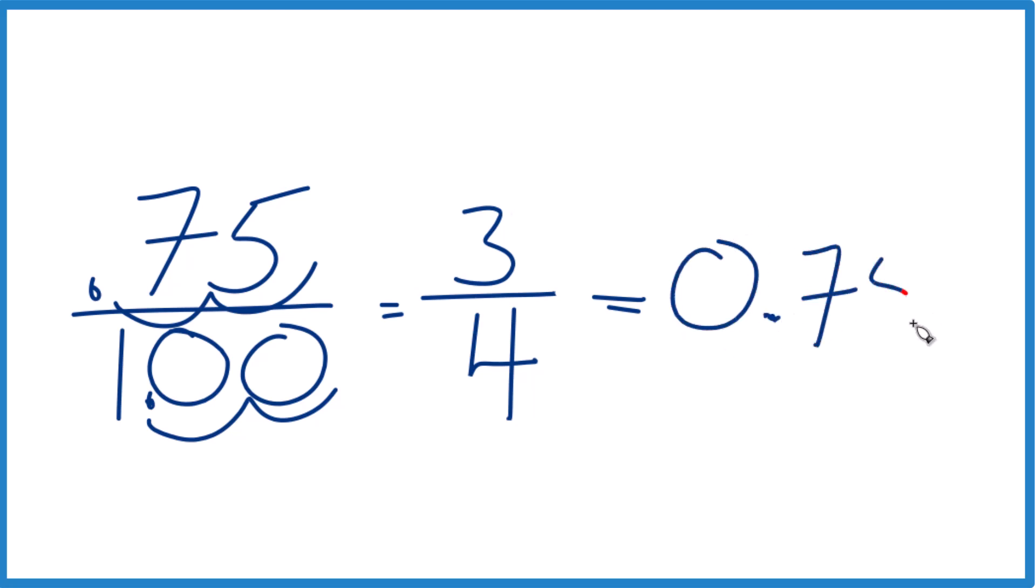And there is our decimal. So 75% as a fraction and a decimal. The fraction, 3 fourths. The decimal, 0.75.